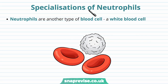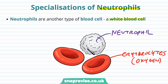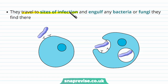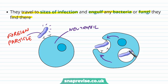Another example of specialization is the neutrophil, which is a particular type of white blood cell found in the blood, very adapted to its function. Erythrocytes function in carrying oxygen, whereas neutrophils are a type of white blood cell with a different role. The function of neutrophils is to travel to sites of infection — for example where pathogens or foreign bodies have entered the body — and they begin to engulf any bacteria or fungal cells that they find, until the pathogen is finally contained within the cell in a vesicle.